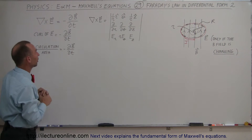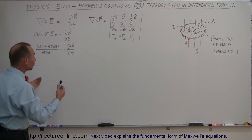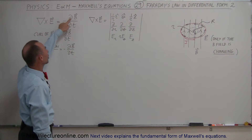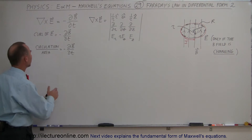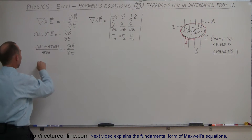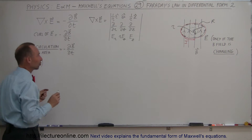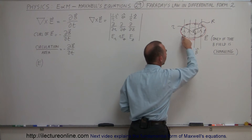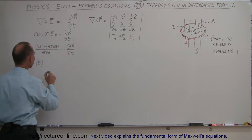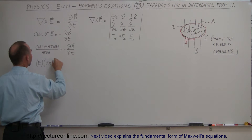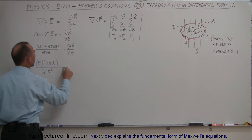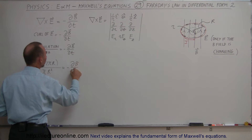Going back to the fourth equation of Maxwell, which represents Faraday's Law: the curl of the electric field is equal to the negative of the change in the B field with respect to time. The curl of E can be defined as the circulation divided by the area. The circulation is the strength of the electric field at that point — which will be the same all the way around the circular path if the B field is uniformly distributed — times the length of the path, two pi times R, divided by the area inscribed by that path, which is pi R squared. That equals the negative of the change of the B field with respect to time.